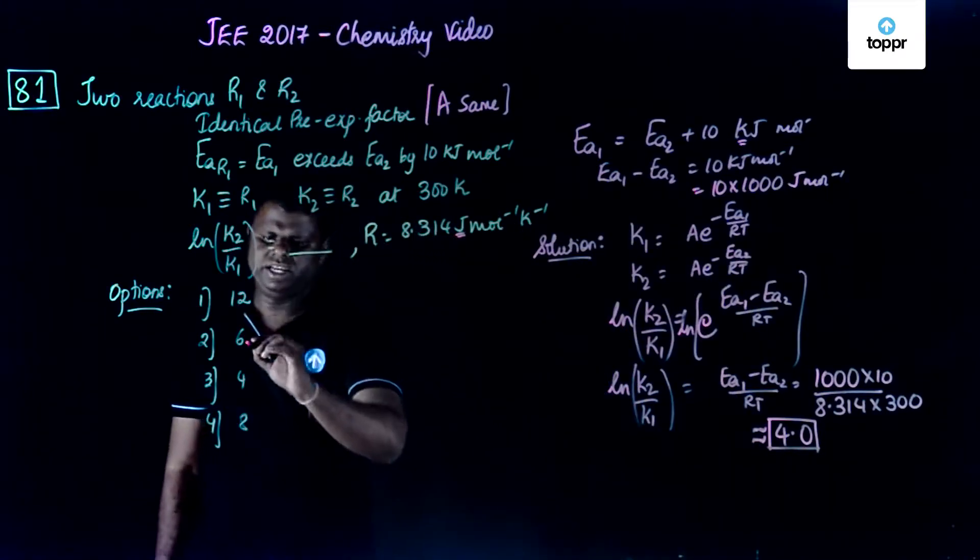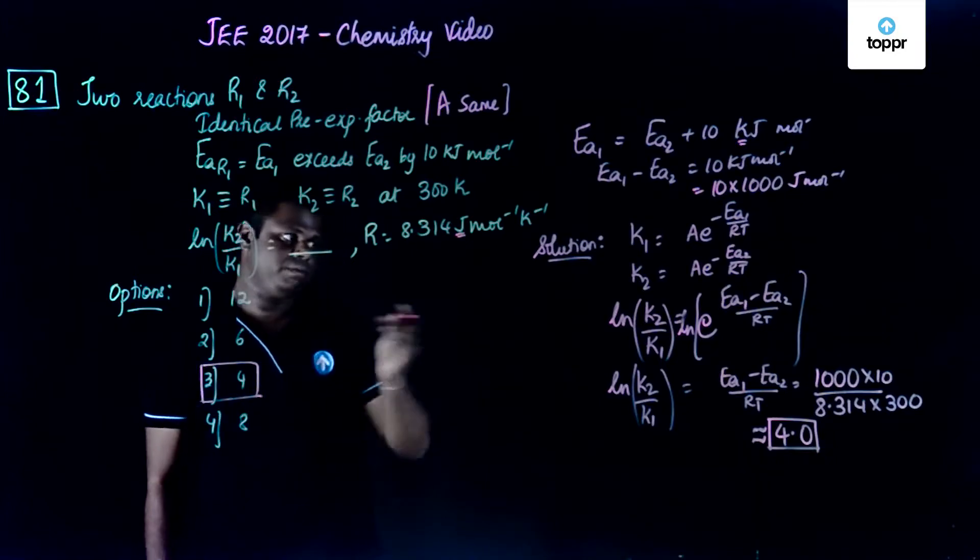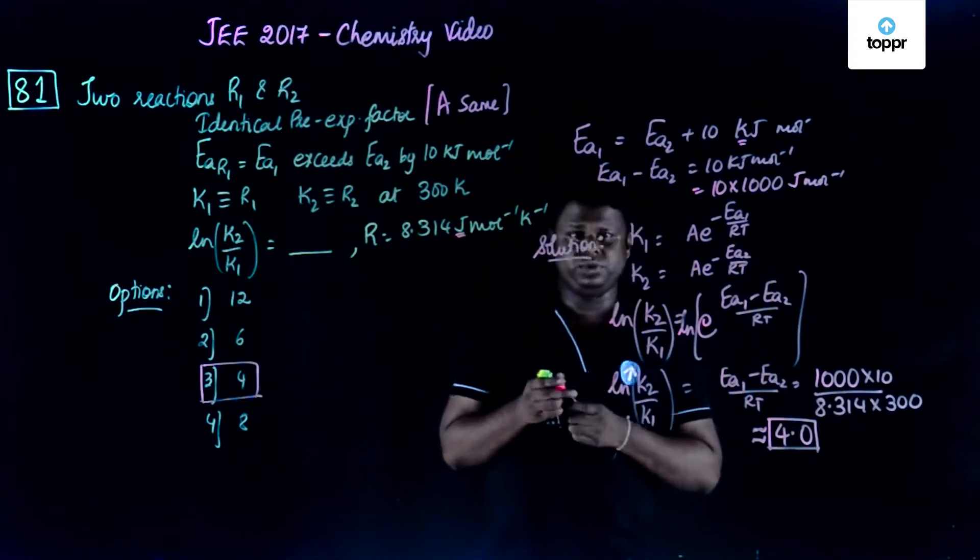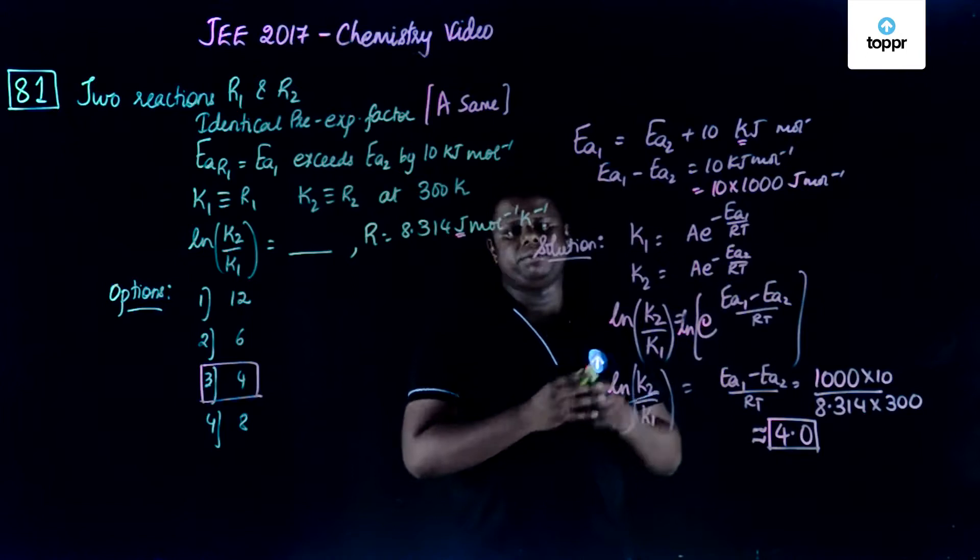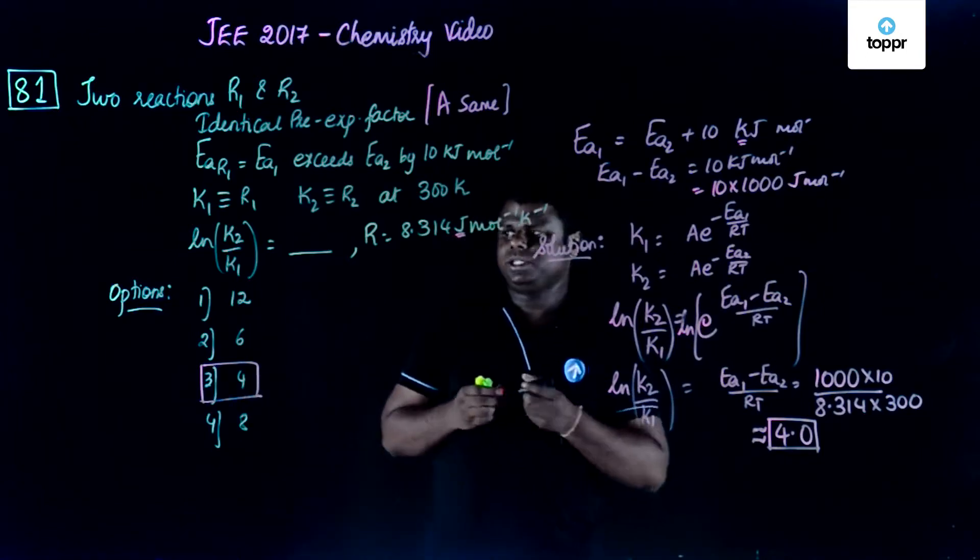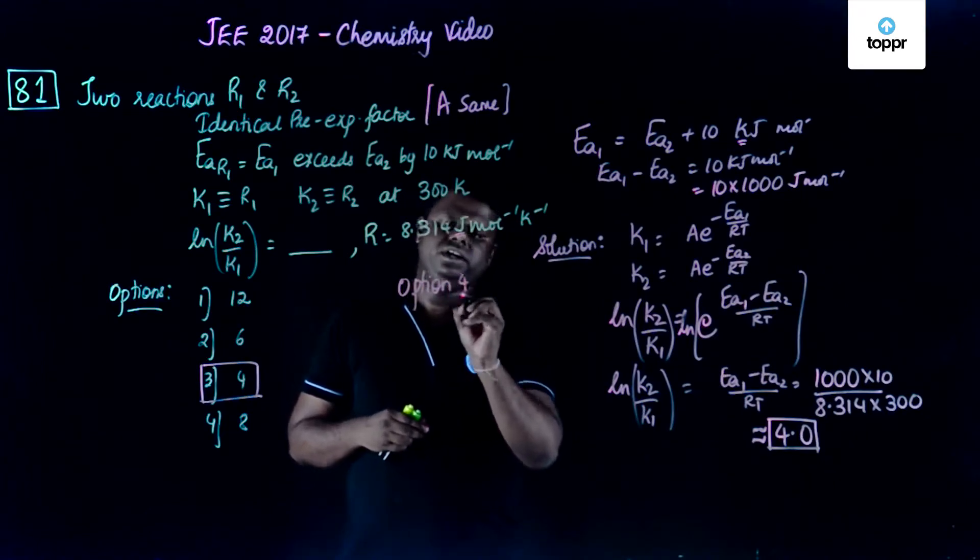Now let's look at the options. First option 12 is incorrect, 6 is incorrect, 8 is incorrect, and finally you have 4. That means you may get it near to 4 like 4.009 or 3.99 depending upon the approximation technique, but the answer comes closer to 4.